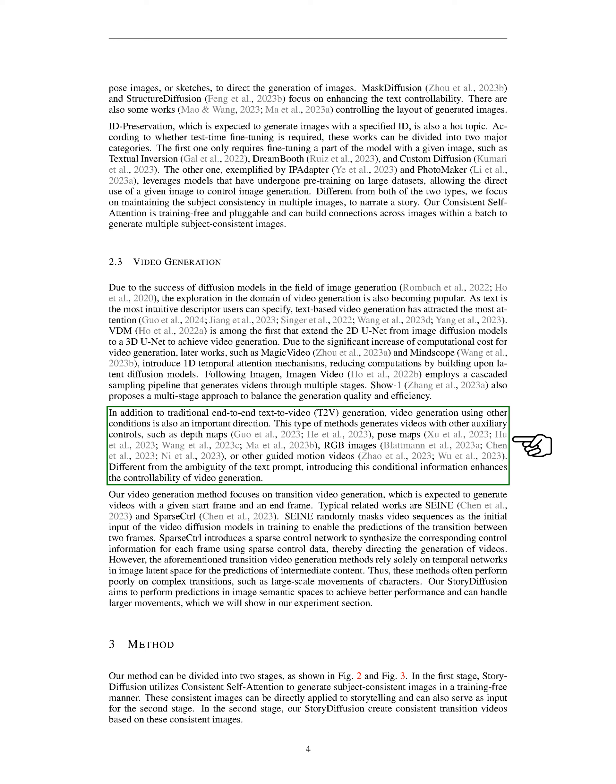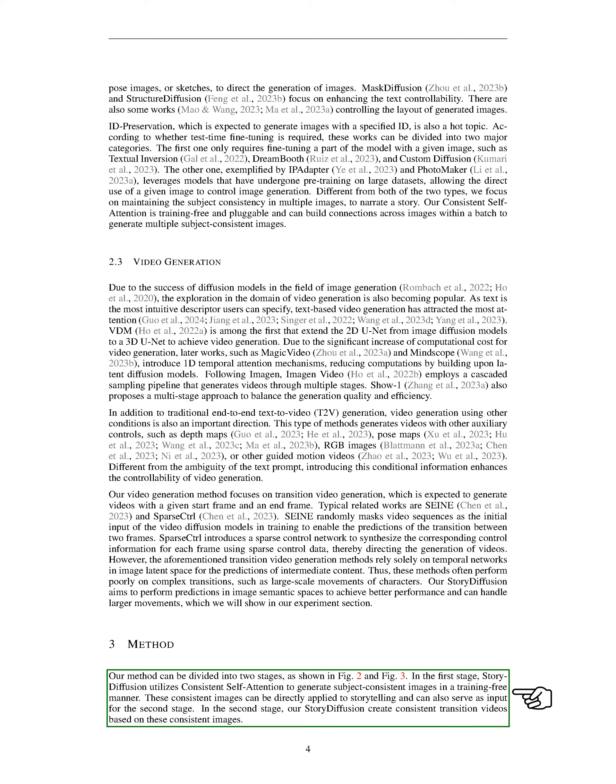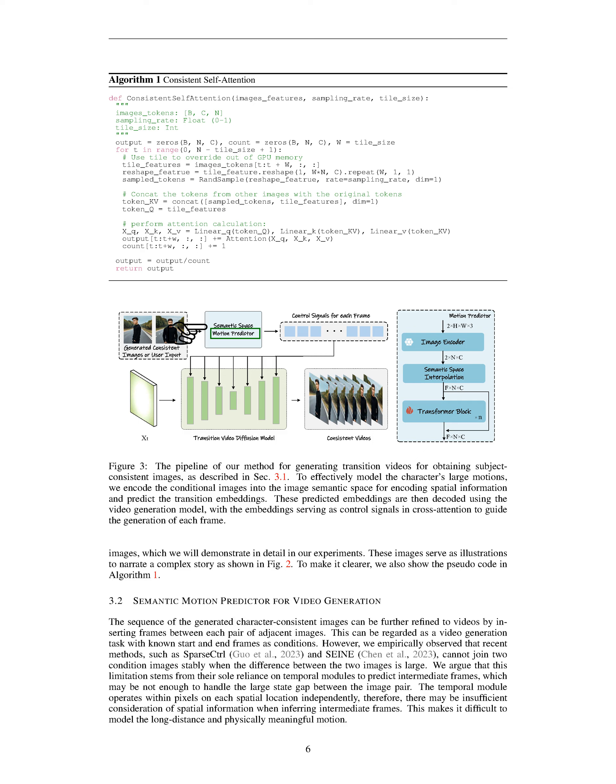These conditional inputs enhance the controllability of video generation. Our video generation method focuses on transition video generation, aiming to create videos with specified start and end frames. Works like SANE and Sparse CTRL have explored transition video generation methods, but they often struggle with complex transitions. In contrast, our method, Story Diffusion, aims to improve performance by making predictions in image semantic spaces, enabling better handling of large movements in videos. Our method consists of two stages: in the first stage, consistent self-attention is used to generate subject-consistent images without the need for training. These images can be directly used for storytelling and as input for the second stage, where consistent transition videos are created based on these images.